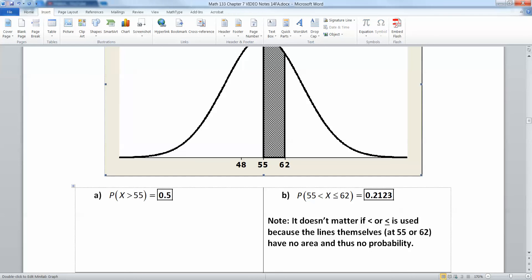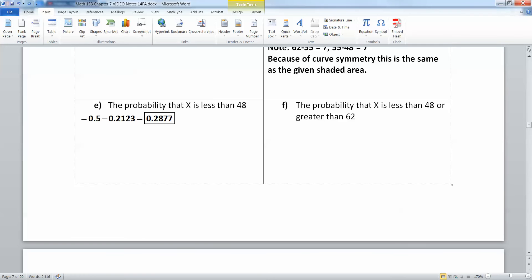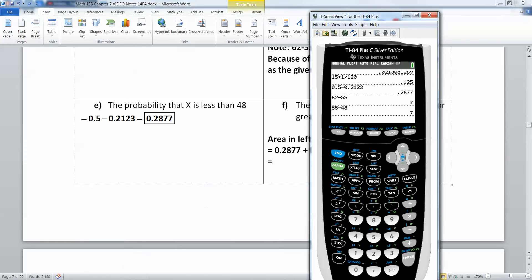You take 0.2877 plus another 0.2877. This is 0.2877 plus 0.2877, which is 2 times 0.2877, which is 0.5754.